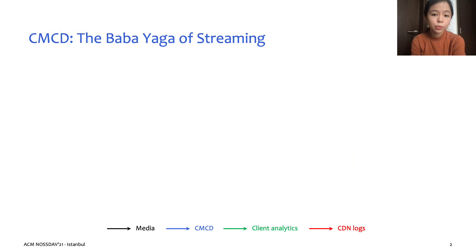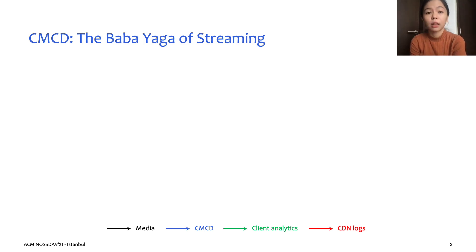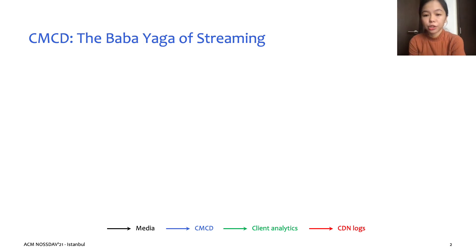CMCD, which stands for Common Media Client Data, is a recent standardization effort by the Consumer Technology Association, or CTA in short, to improve client-server information sharing in media applications.